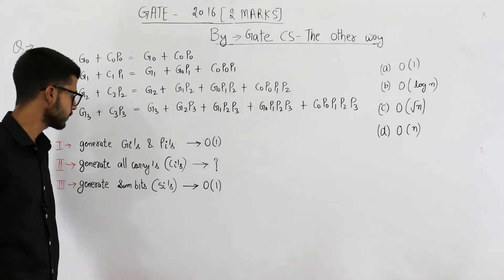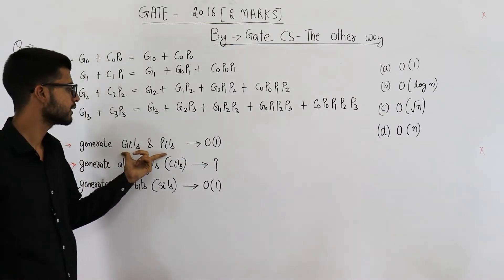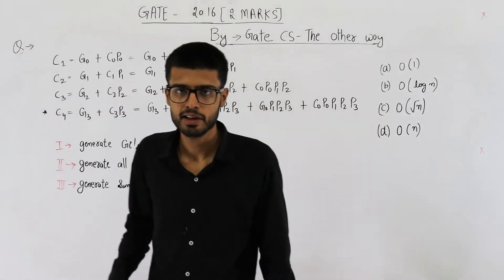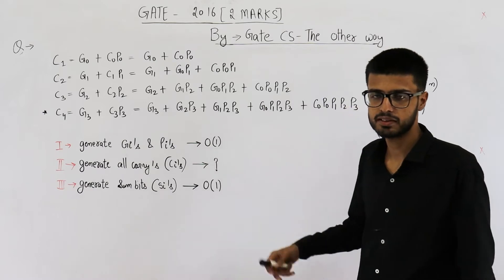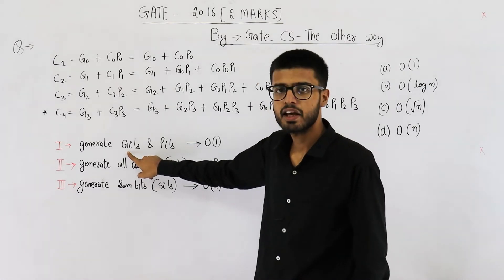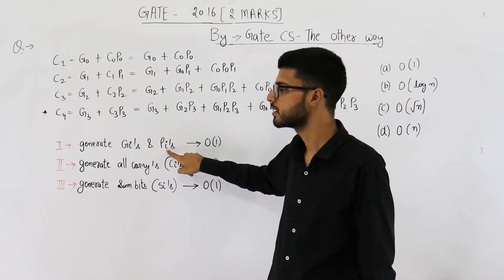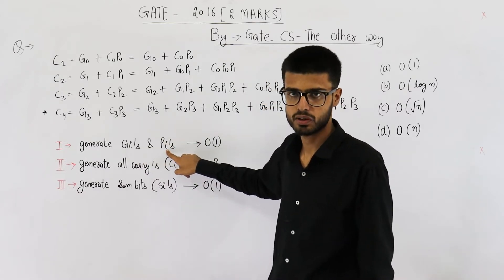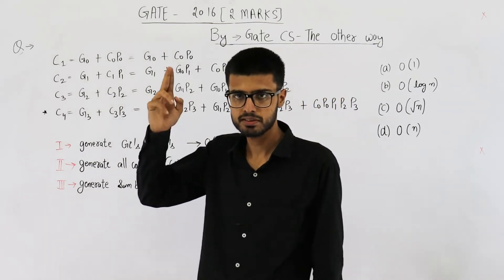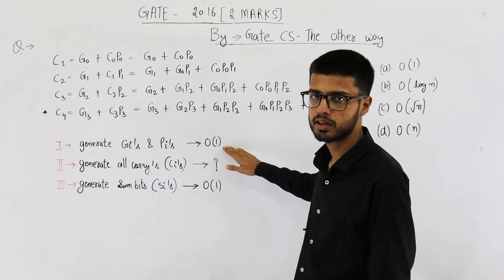A carry look-ahead adder requires three steps. Step one is generating all the carry generates and carry propagates. If you are trying to add n-bit numbers, all n carry generates — the gi's — will require n AND gates, and all the pi's will require n XOR gates. All of these 2n gates are working in parallel, meaning in a single level all gi's and pi's will be available. So this is a constant time operation.